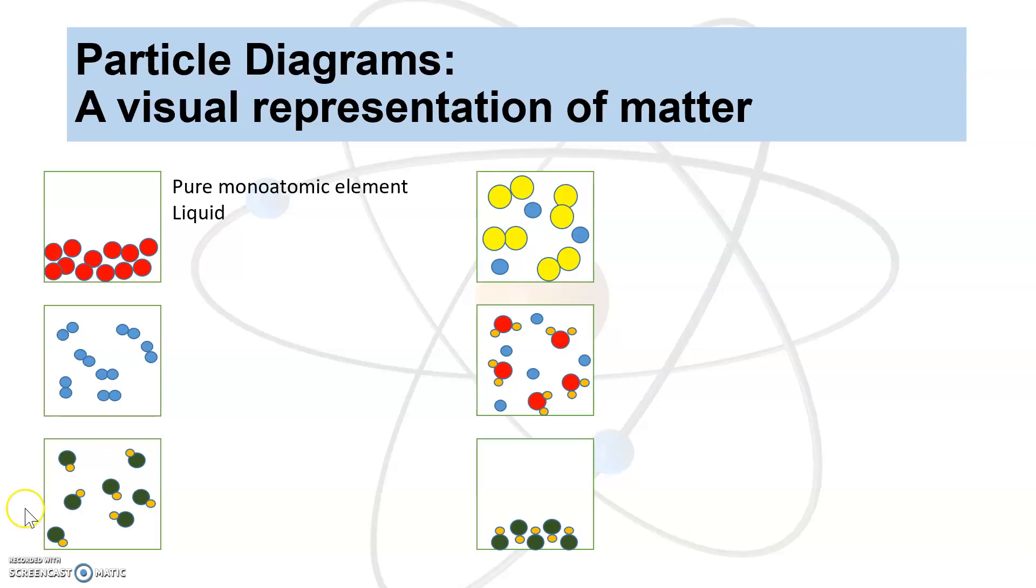The next one looks like we have just the same sphere, same color, same size. So we have one type of atom, but they are going around in twos. So this is a diatomic element. Since it's filling this square, it's a gas. So we have a diatomic element in the gaseous state.